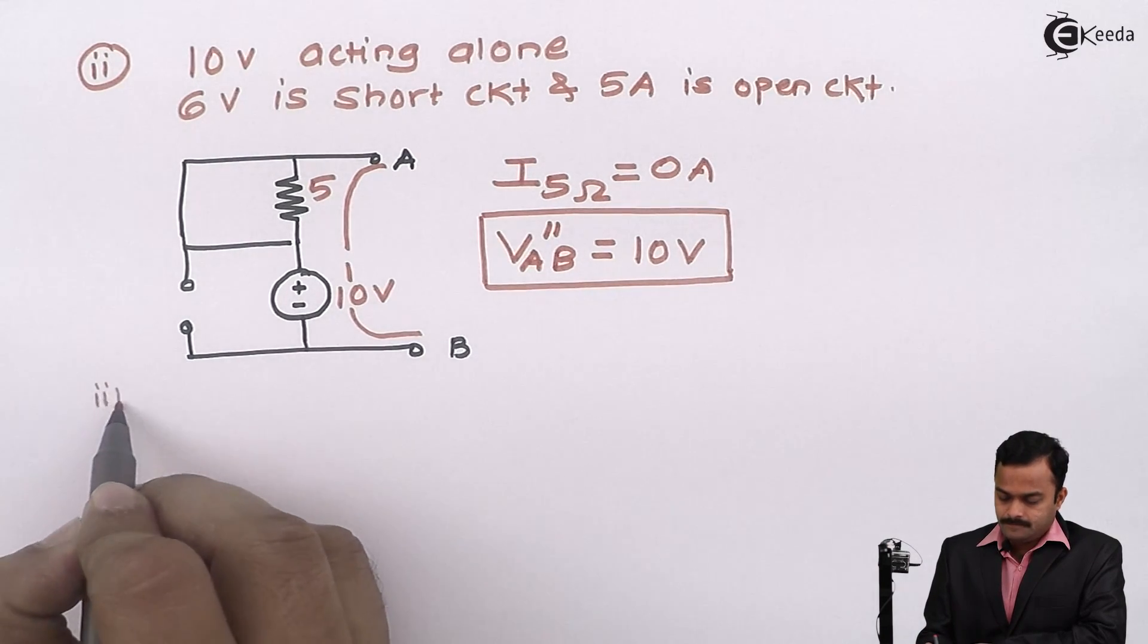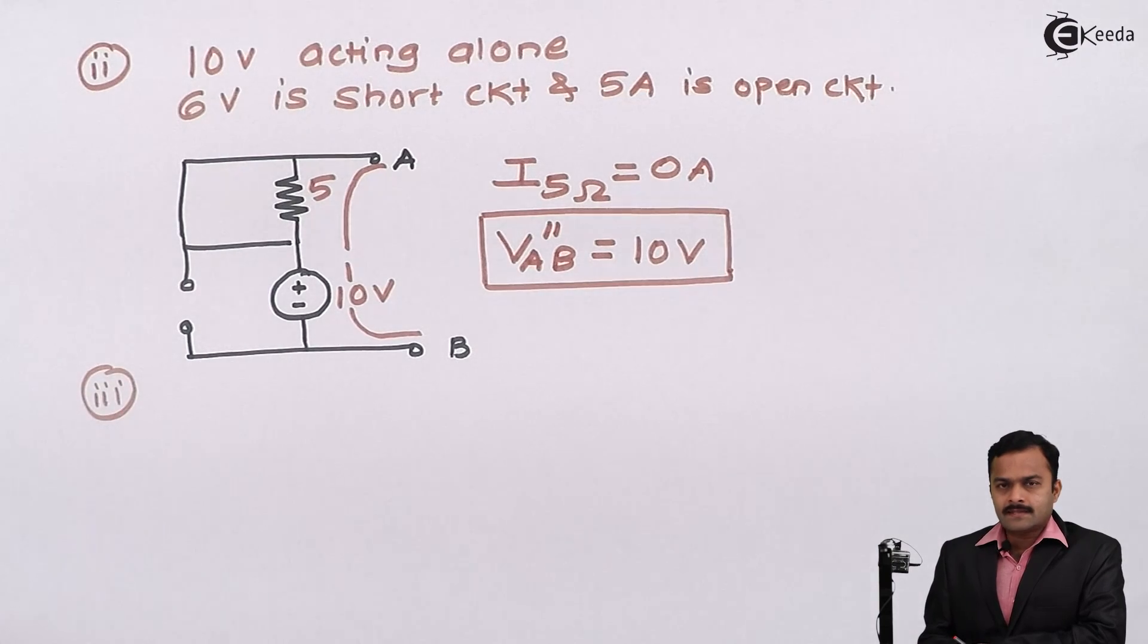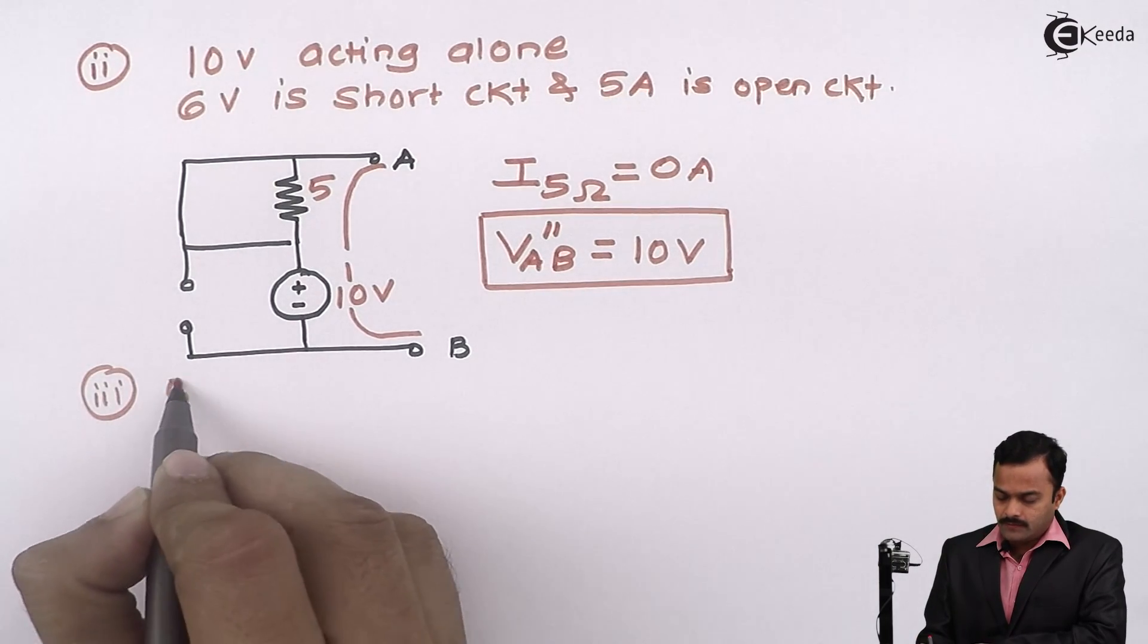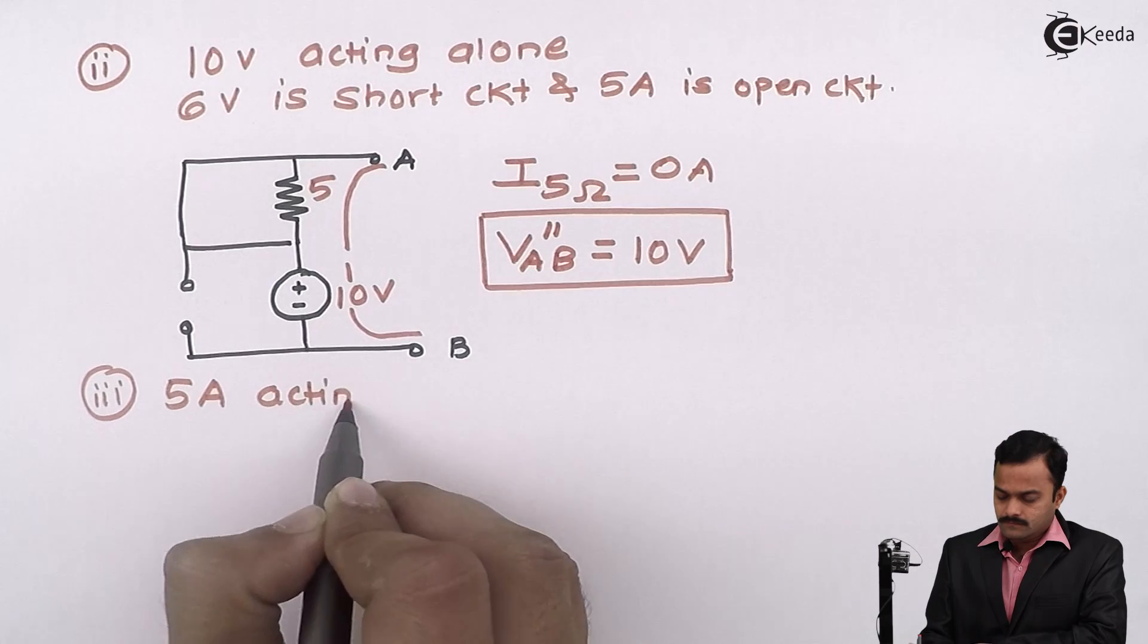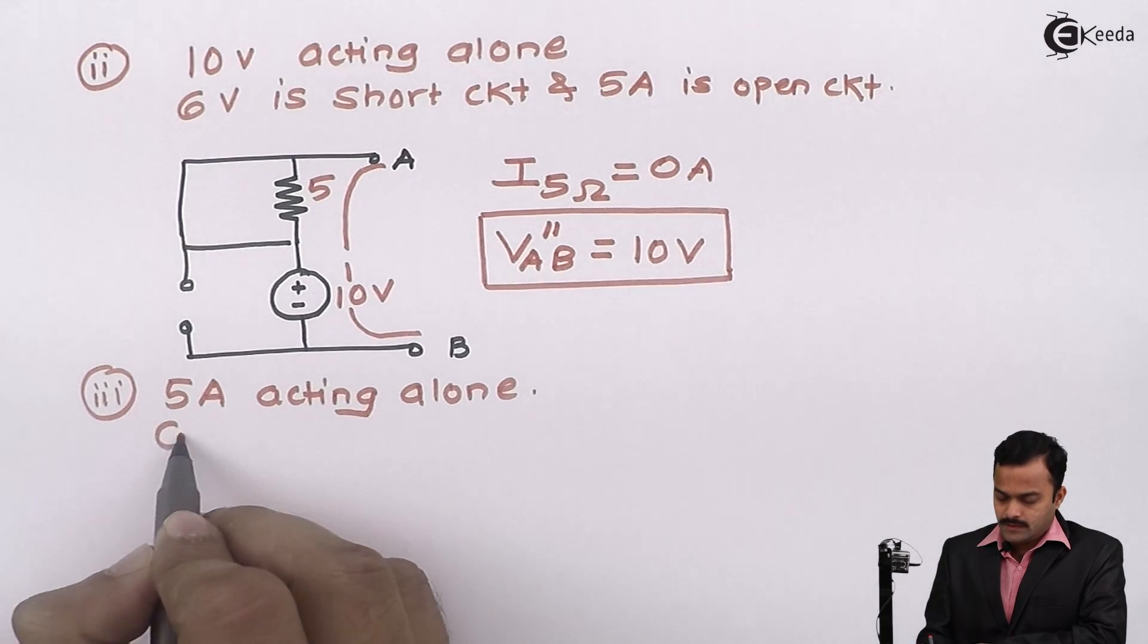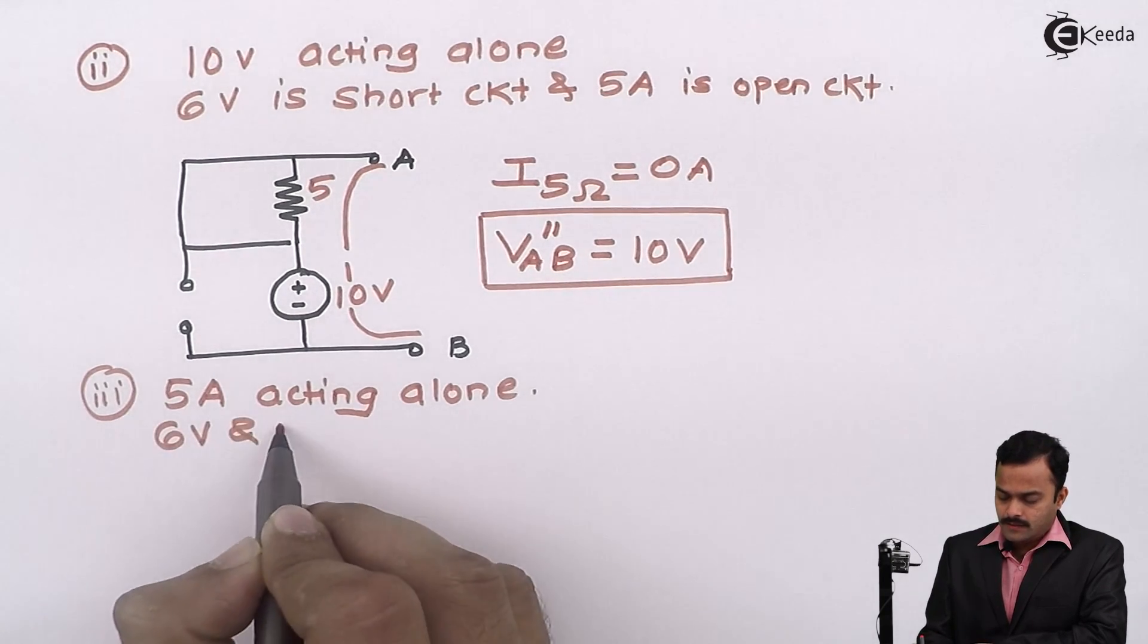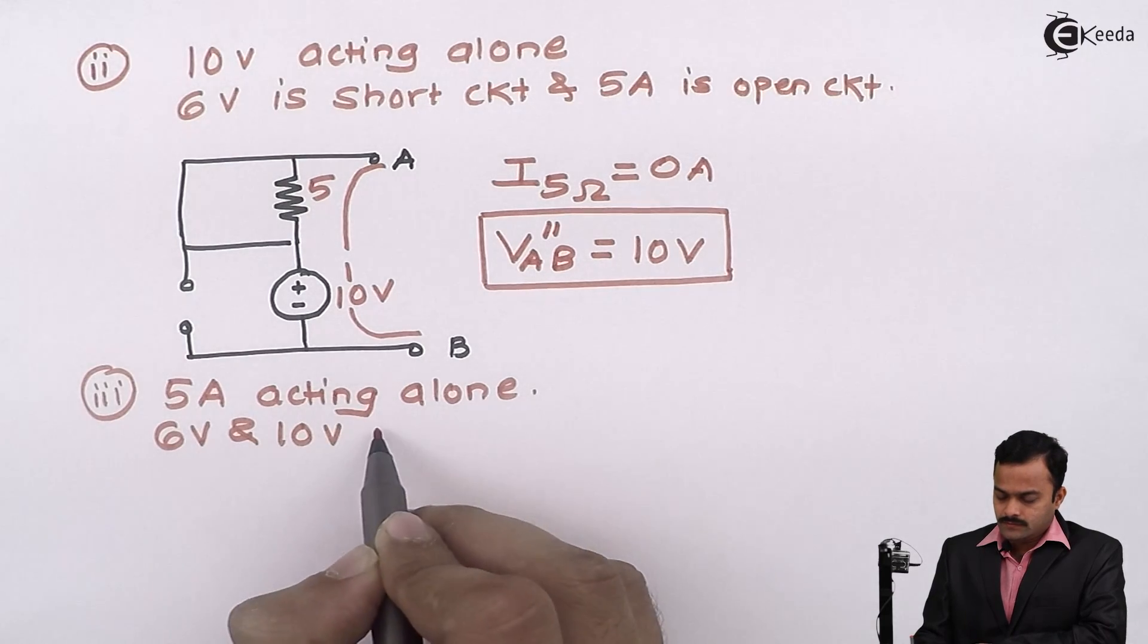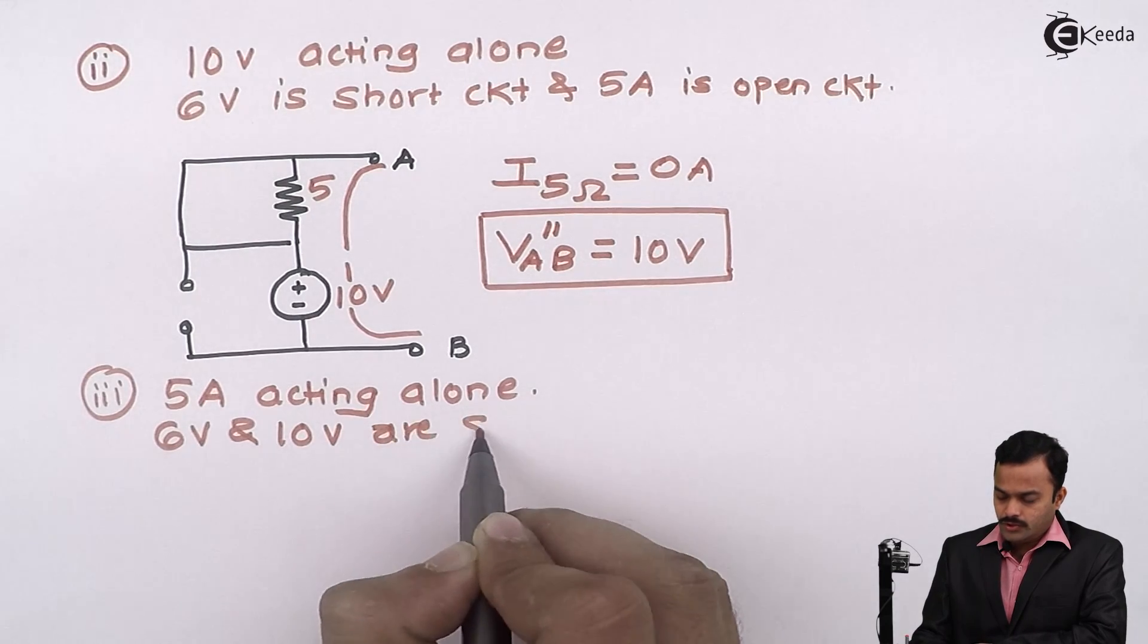Third step, let us consider 5A acting alone. Now, remaining sources are voltage sources, I need to short circuit them. So 6V and 10V are short circuited.